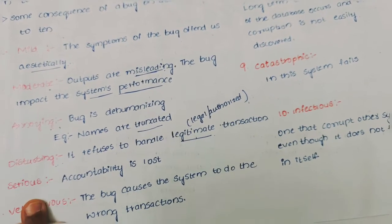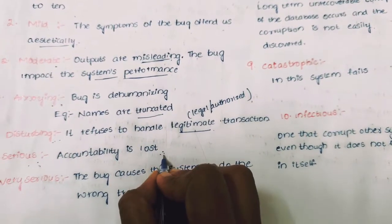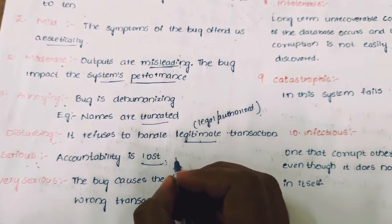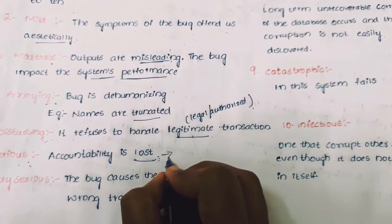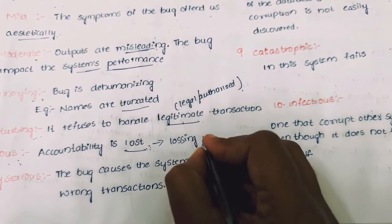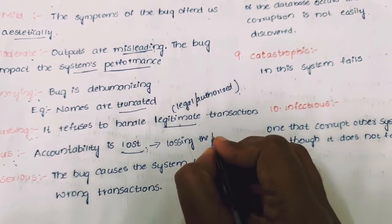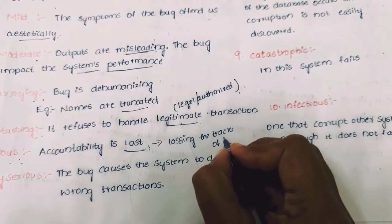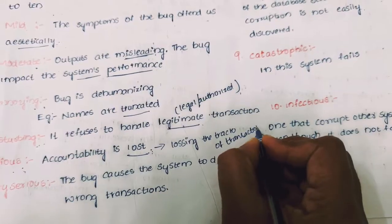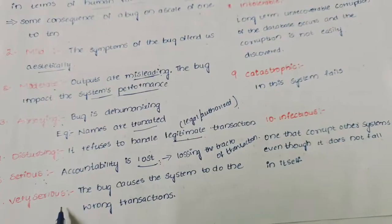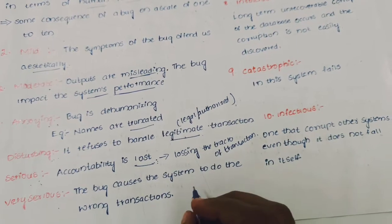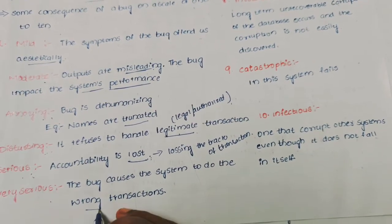5th one, serious: accountability is lost, which is nothing but losing the track of transactions. Very serious, which is nothing but in this wrong transaction can be happened due to this bug.